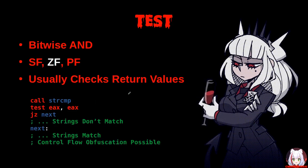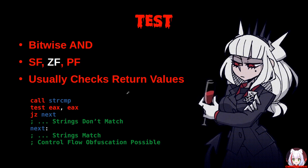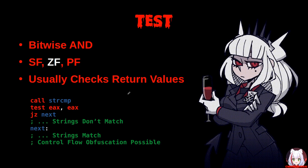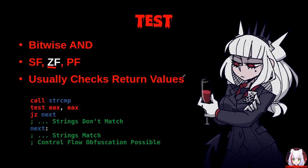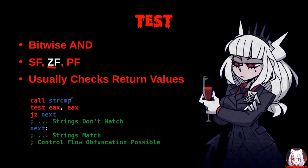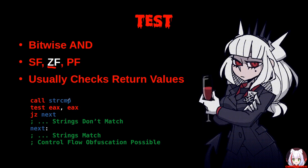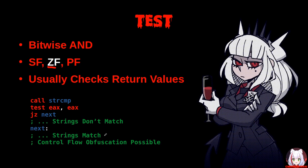The TEST instruction computes the bitwise logical AND of the first and second operands and sets the SF, ZF, and PF status flags according to the result. Typically, you'll see the ZF flag used most — it's generally used to check return values. For example, if we are comparing two strings, a string compare function will return 0 if they match. It performs a bitwise AND against itself; if the result is 0, the jump is taken. So if the strings match, execution goes to one location; if they don't match, it jumps to another.